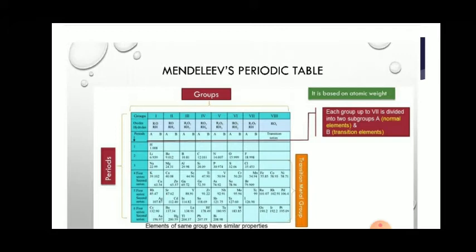In the group — as we discussed yesterday — the horizontal columns are known as a group: first, second, third, fourth, fifth, sixth, seventh, and eighth. Eight groups are there and a seventh period. In the periodic table there are six periods; the seventh one is a drawback.